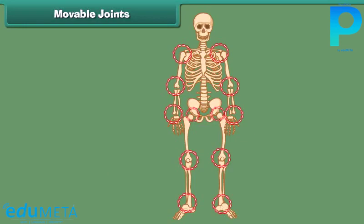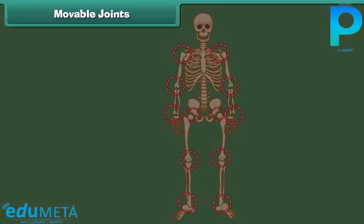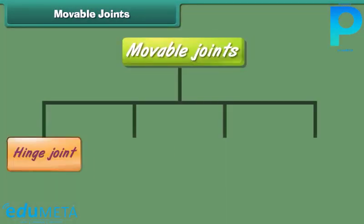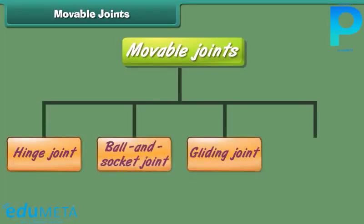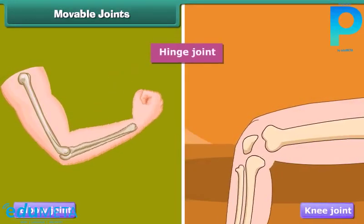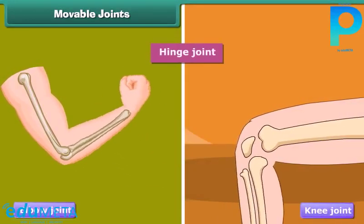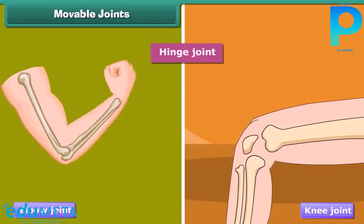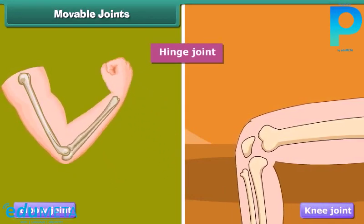Most movable joints allow free movement of the body parts, whereas in some joints only a little movement is possible. Moveable joints are grouped into four types on the basis of movement. Hinge joints are the joints which can be bent in only one direction.